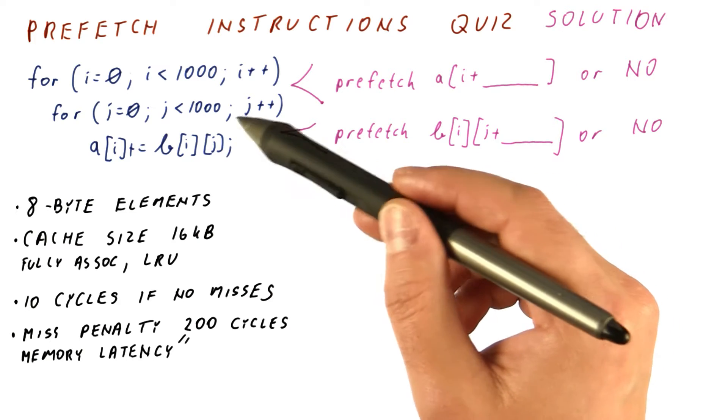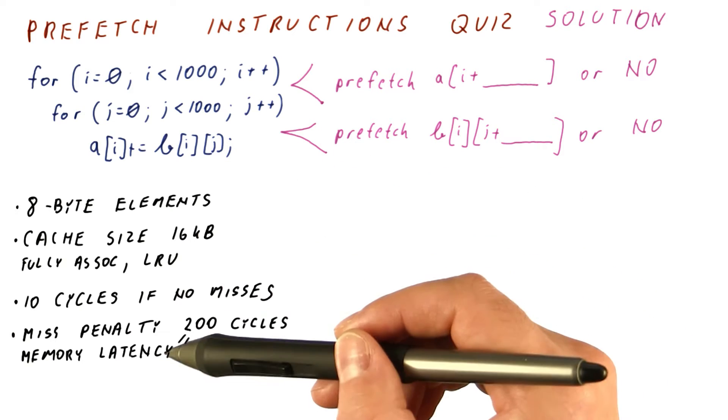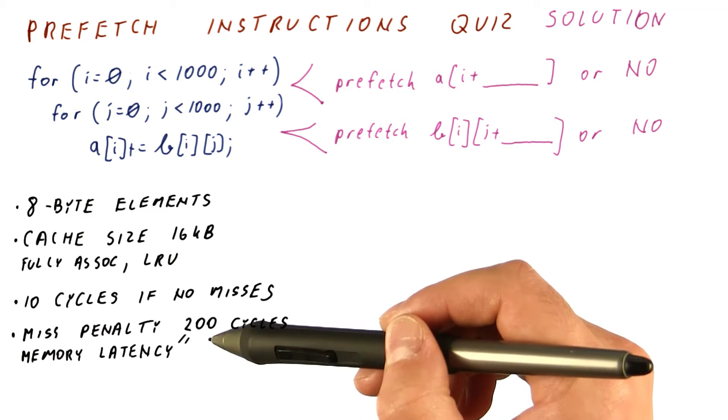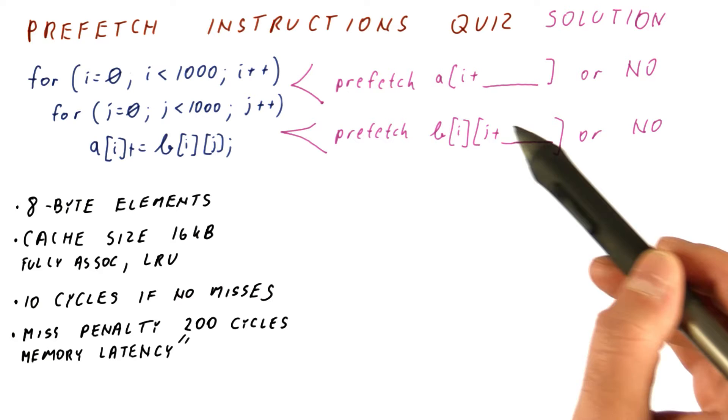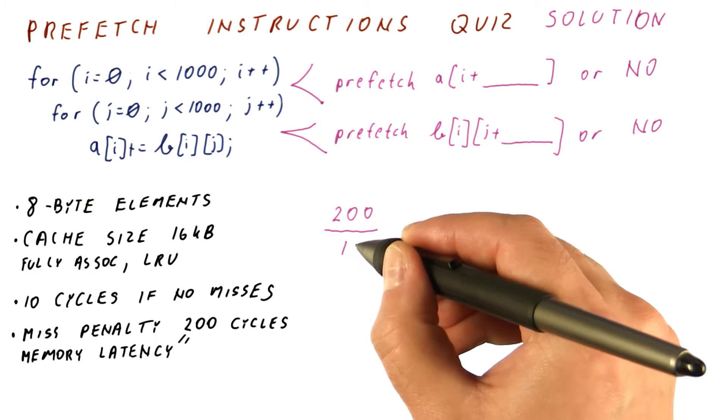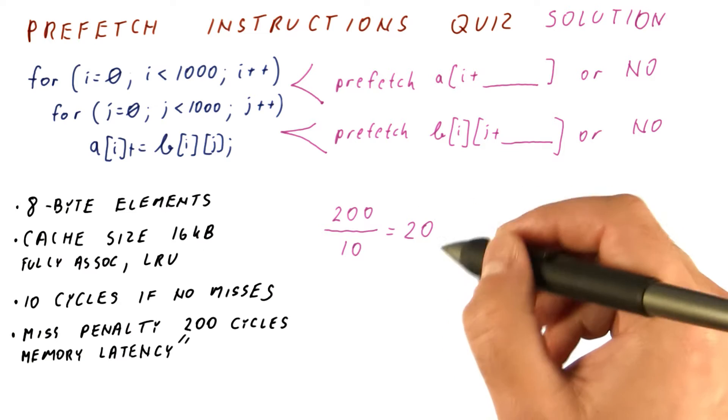If we do prefetching correctly, there will be 10 cycles per iteration. The miss penalty and memory latency are 200 cycles, which means we should issue a prefetch for a B element. 200 cycles before we reach it corresponds to 20 iterations.